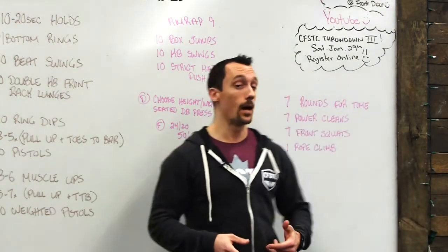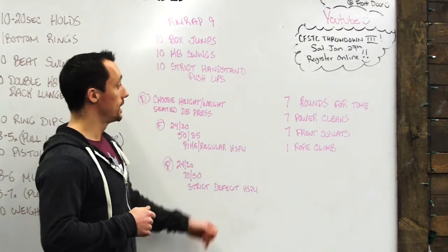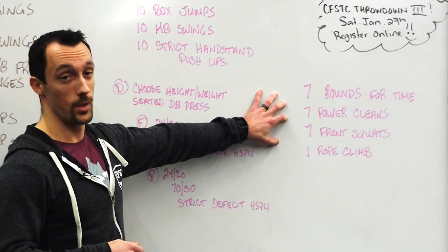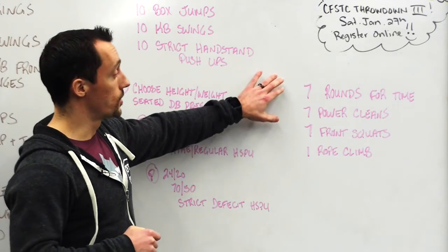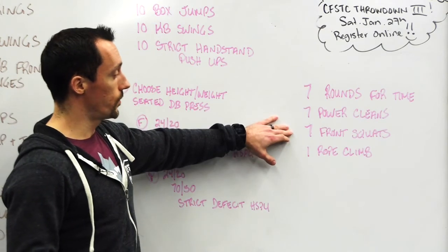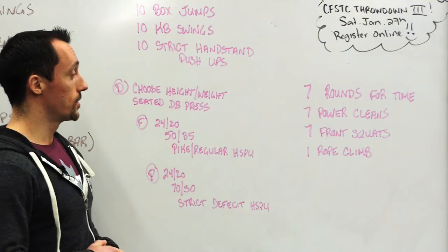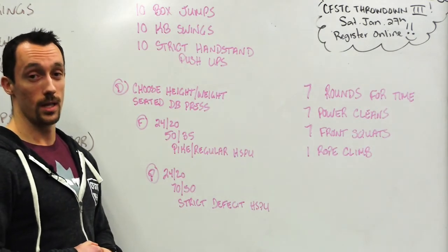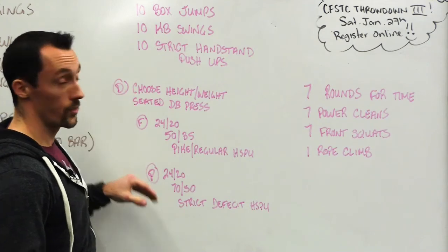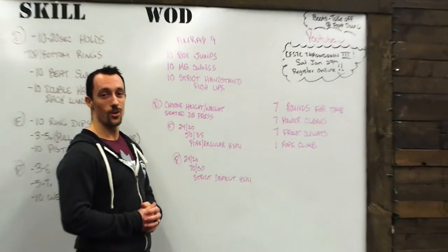Last thing before I leave you — here's a sneak peek at Tuesday's workout: seven rounds for time of seven power cleans, seven front squats, and one rope climb. Comment below and let me know what you think the development, fitness, and performance guidelines should be for that workout when you come in. See you tomorrow!